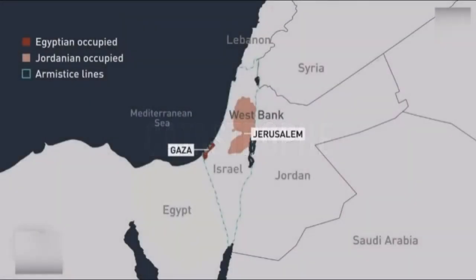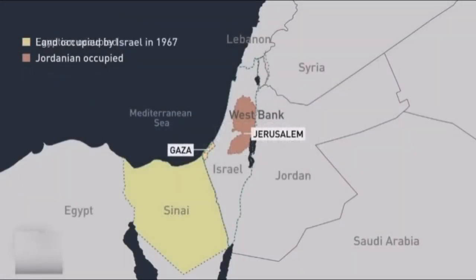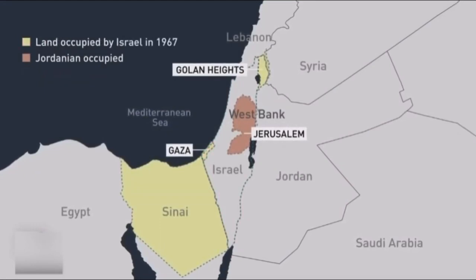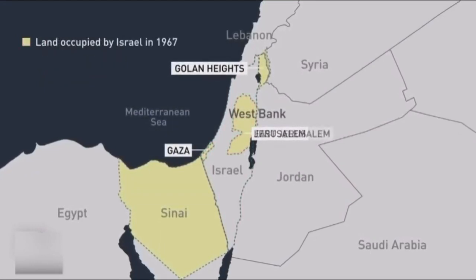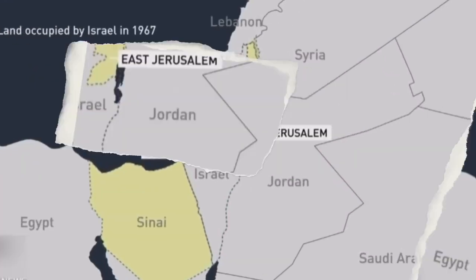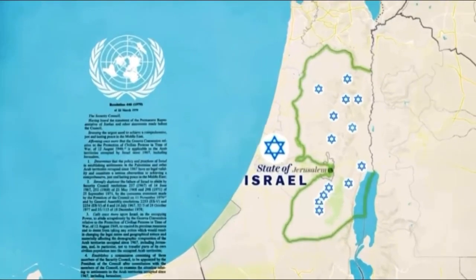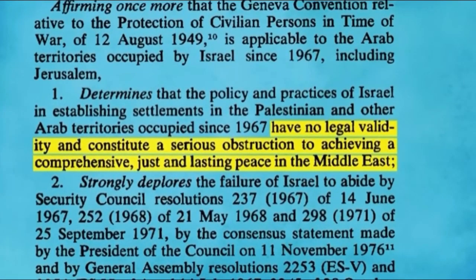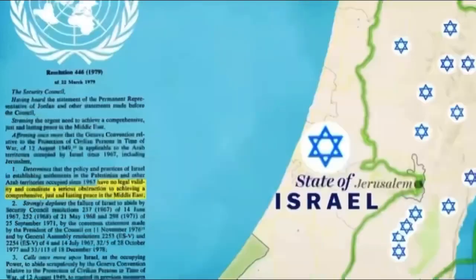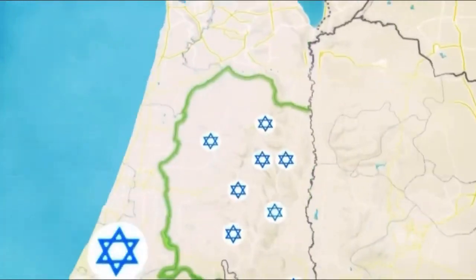In 1967, during the Six-Day War, Israel occupied the West Bank, the Gaza Strip, and the Golan Heights, among other territories. This Israeli occupation of Palestinian lands is considered illegal by the United Nations and is at the core of the ongoing conflict.